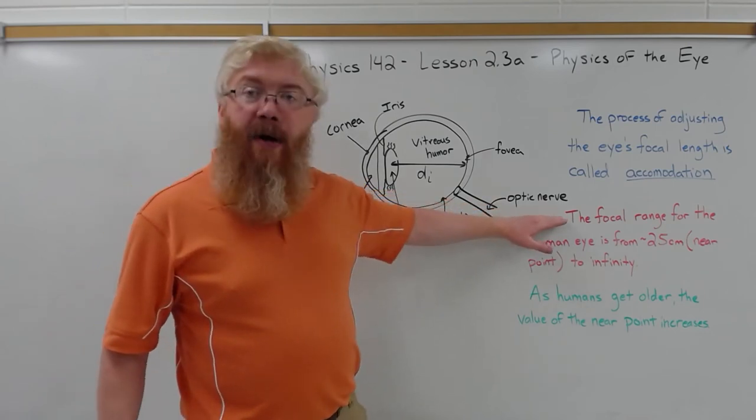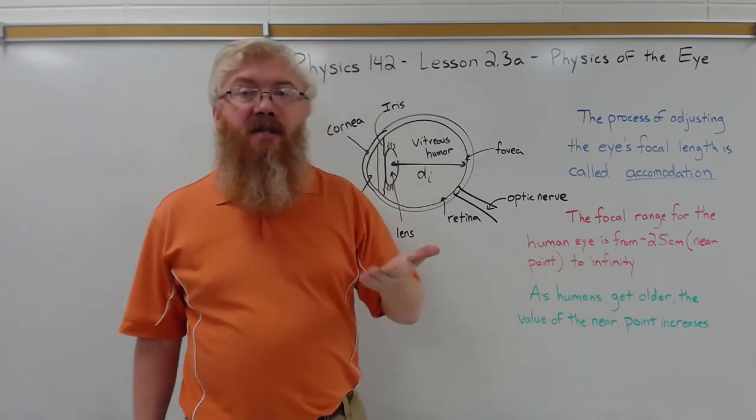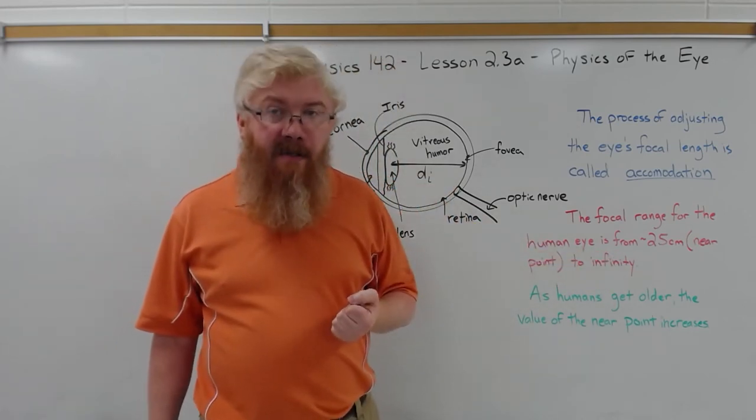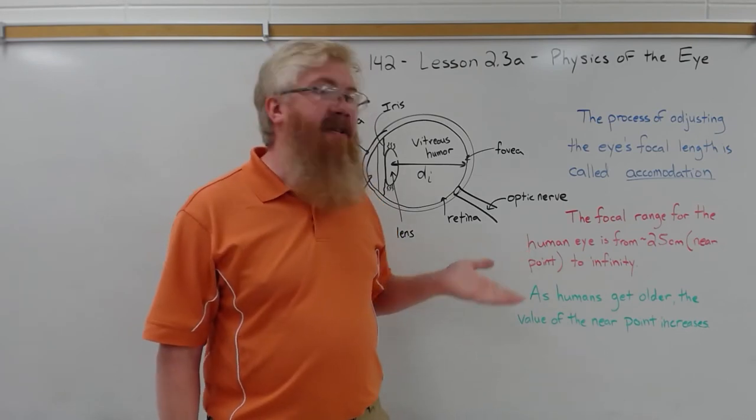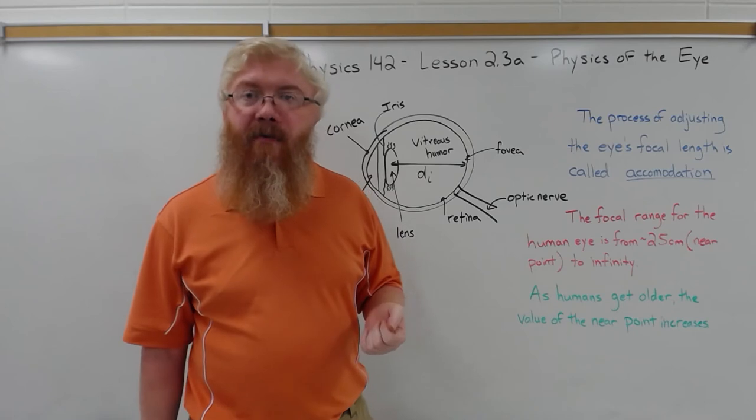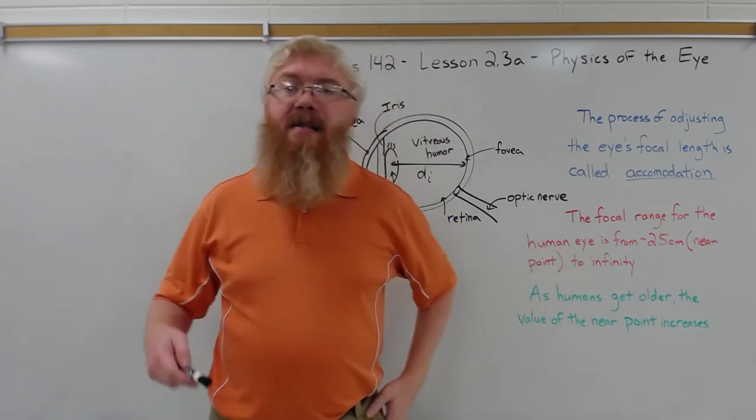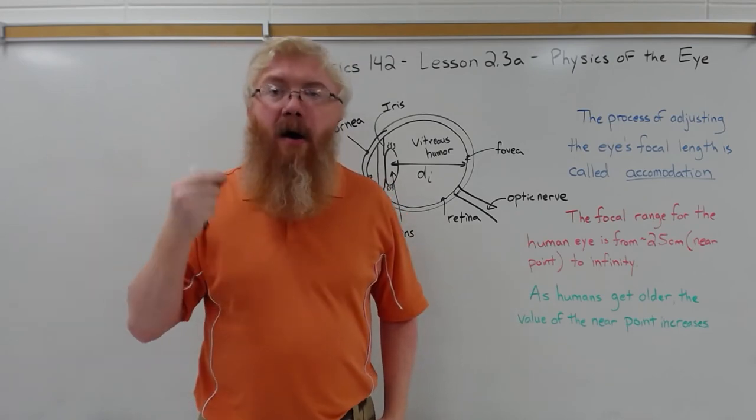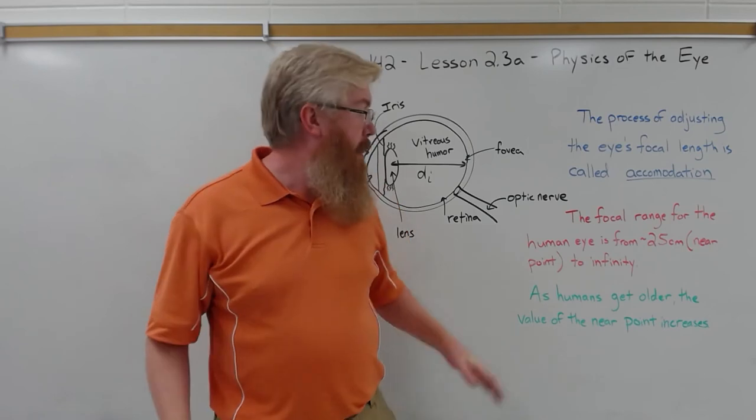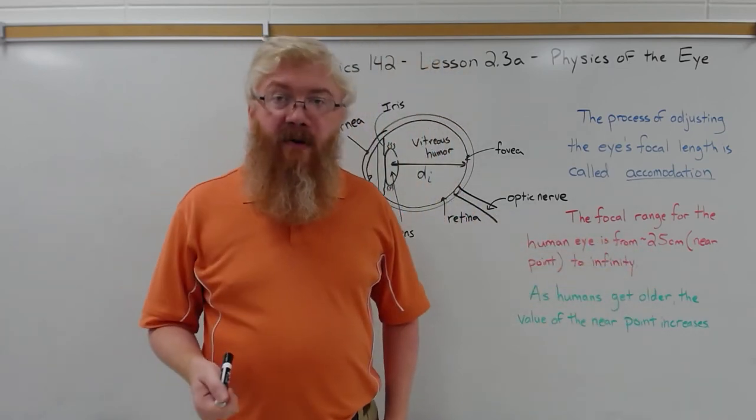Ideally the focal range for the human eye, you can focus easily on things as close as 25 centimeters from your face - that's about 10 inches from your face. You can easily focus out to infinity. That's the ideal range of the human eye. Things closer than that, it's hard to focus. This 25 centimeters is called the near point of your vision.